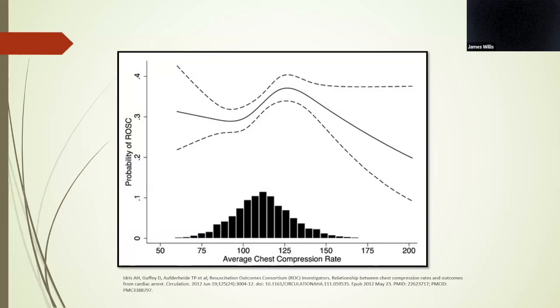In the '80s, there was a study involving canine subjects. They noted higher coronary perfusion pressures, mean arterial pressures, and survival rates among those randomized to a compression rate of 120 versus 60 after an induced V-fib arrest.